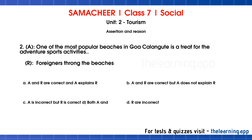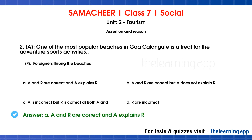Second question — Assertion: One of the most popular beaches in Goa, Calangute, is a treat for adventure sports activities. Reason: Foreigners throng the beaches. Correct answer is option A — both assertion and reason are correct, and assertion explains the reason.